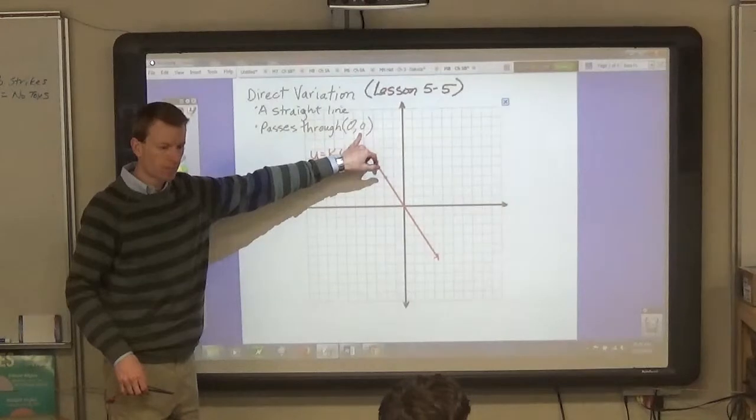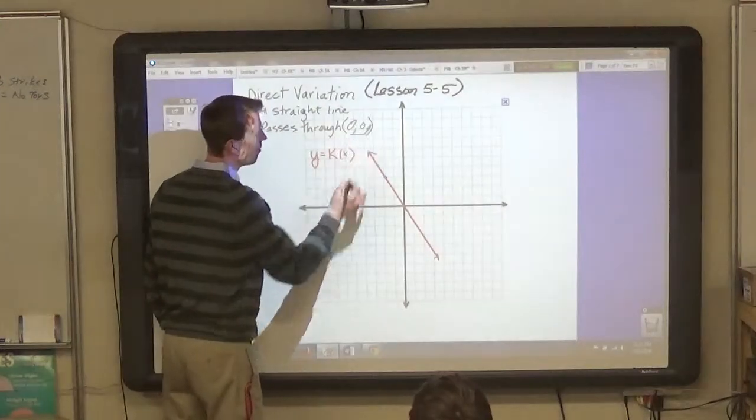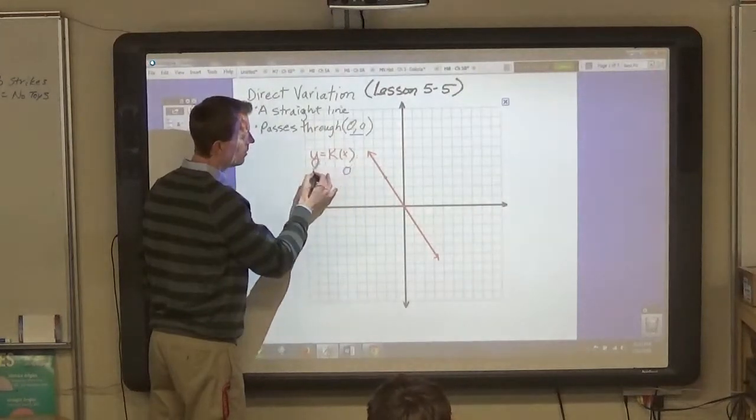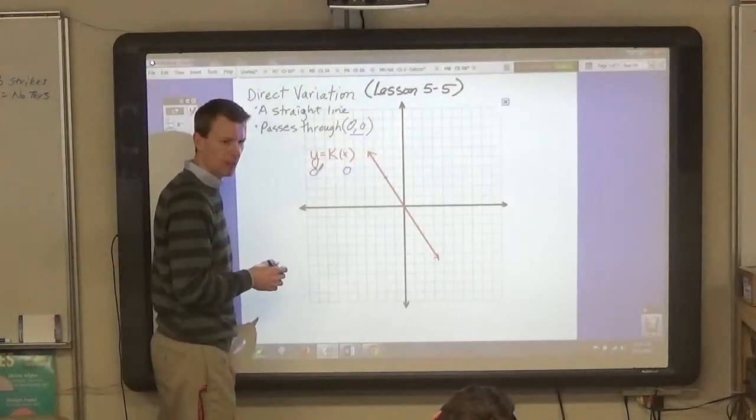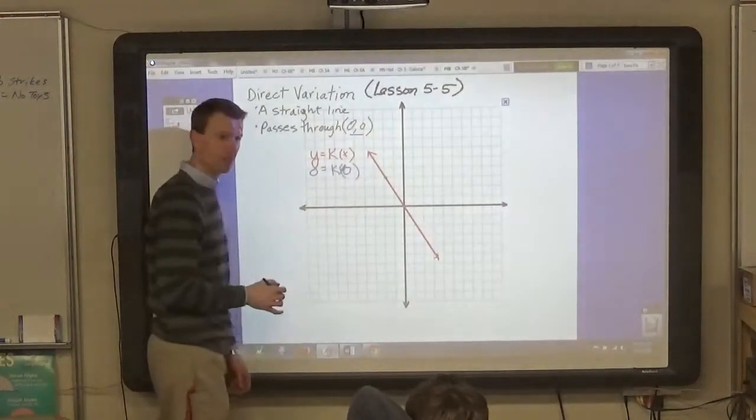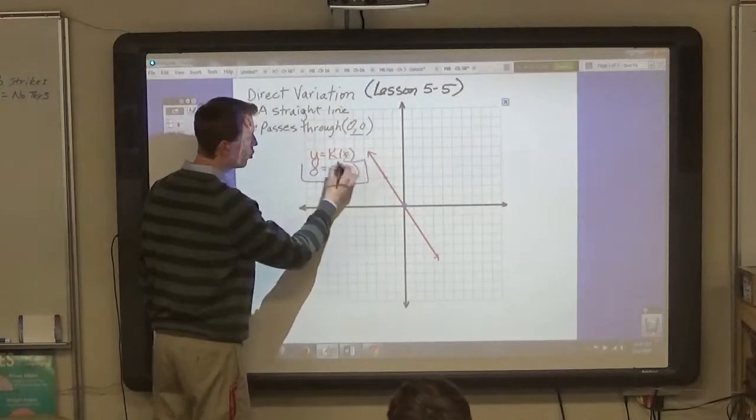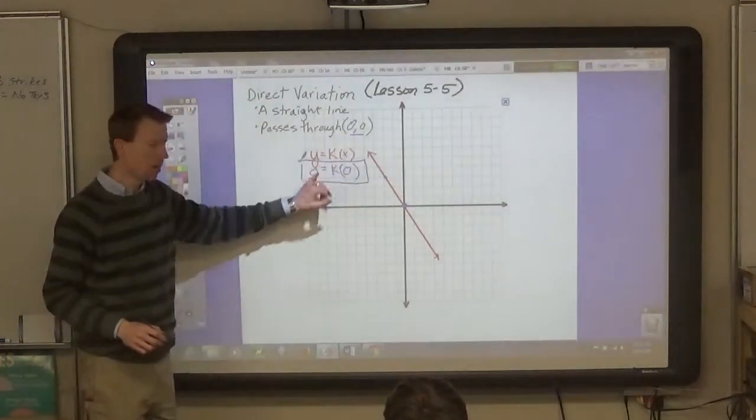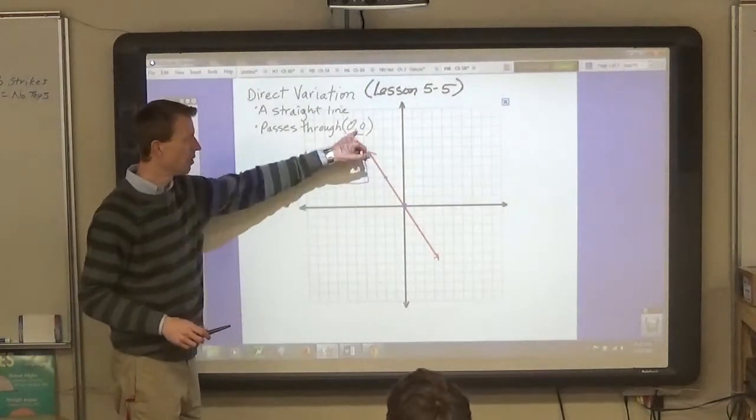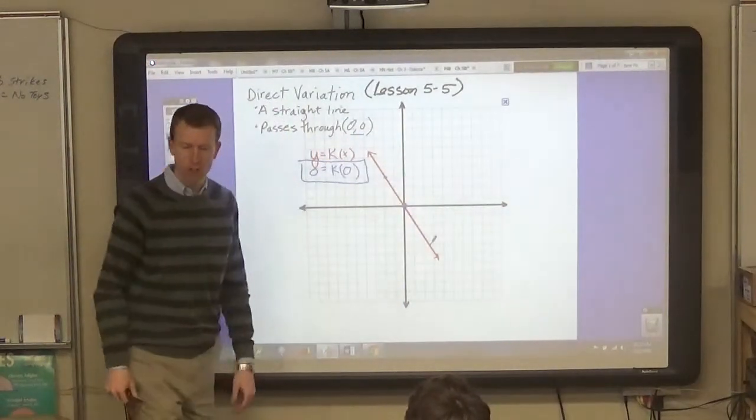Why does it always pass through 0 comma 0? Well, when you put 0, 0 into the equation, what do you get for the answer? K equals 0. And this point always works in this equation. It's a true equation when you use 0 comma 0, and so this point is always a point on a line for direct variation.